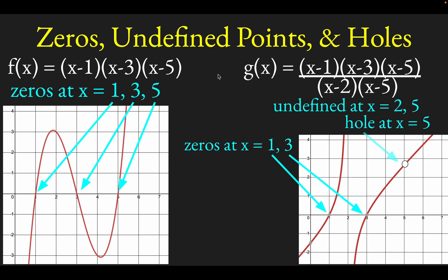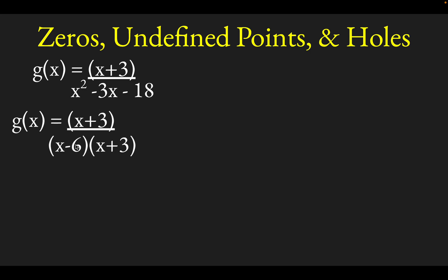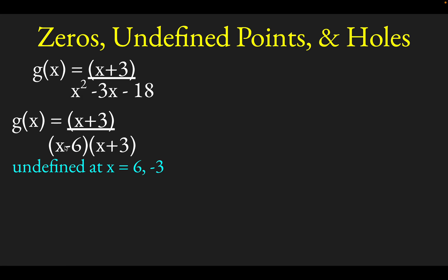So by looking at where factors in the denominator go to zero, you can find places where the function is undefined, and by looking at where factors in the numerator go to zero, you can find the zeros of the function. Let's do a couple of quick examples. Here's another function: we have x plus 3 in the numerator and x squared minus 3x minus 18 in the denominator. To find where it's undefined, let's factor that denominator — it factors into x minus 6 and x plus 3. So the function is undefined at x equals 6 and at x equals negative 3.